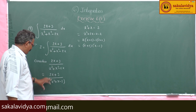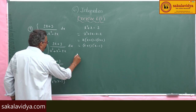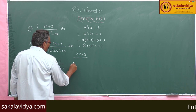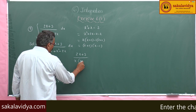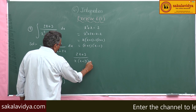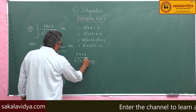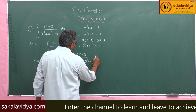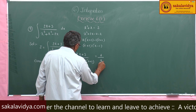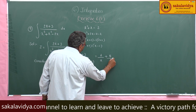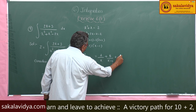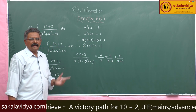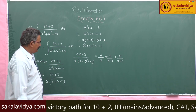Now, this can be rewritten as (2x + 3) divided by x(x - 1)(x + 2). So, the partial fractions are of the form A/x + B/(x - 1) + C/(x + 2). In this case, three values A, B, C are to be evaluated.